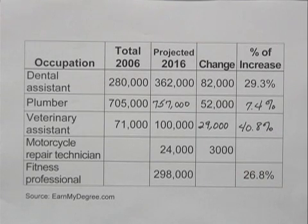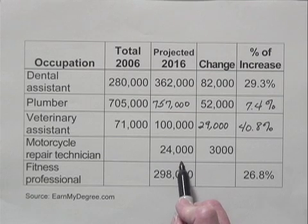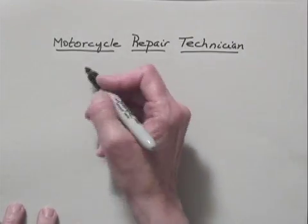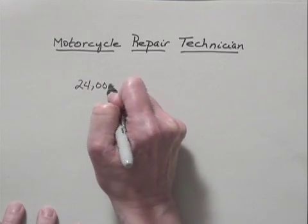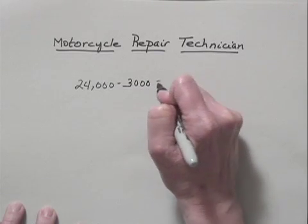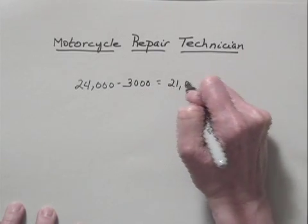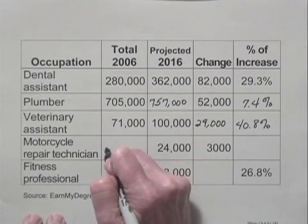Now let's consider the motorcycle repair technician. We can subtract to find the total in 2006. We know the projected number for 2016 and we know the change. So let's subtract to find the number of jobs in 2006: 24,000 minus 3,000, which is 21,000. So 21,000 is the number for 2006.